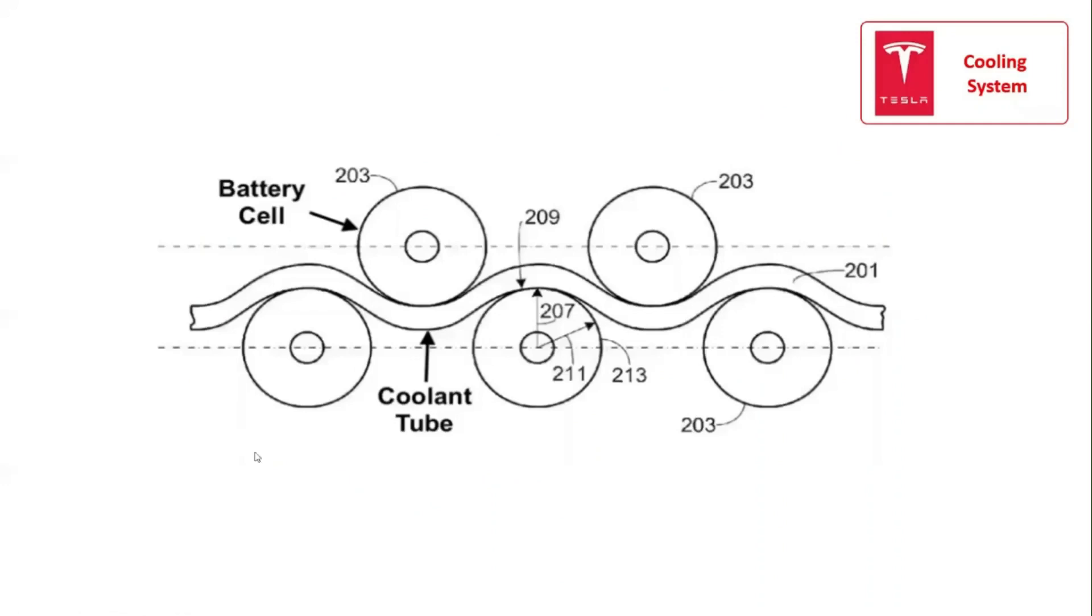To improve the heat transfer efficiency between each battery cell and the battery cooling system, the coolant tube running inside the battery pack has a wavy profile. Such a profile increases the contact surface between the battery cell and the coolant tube.